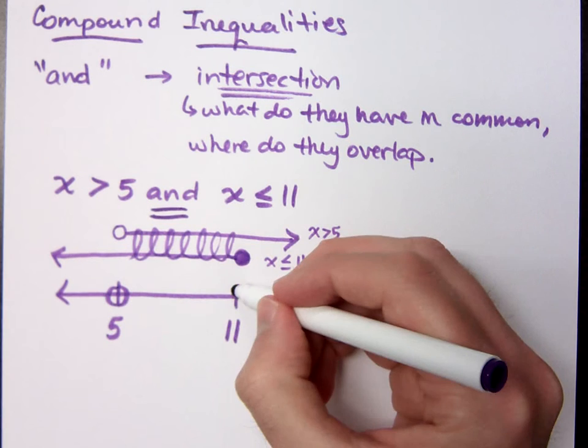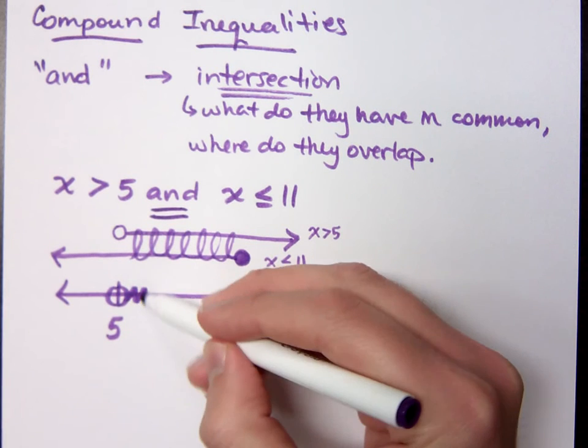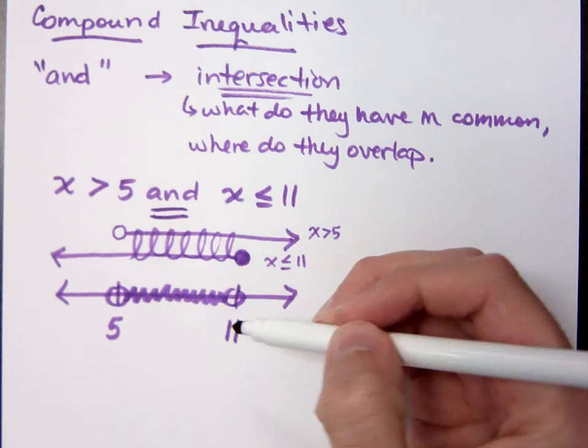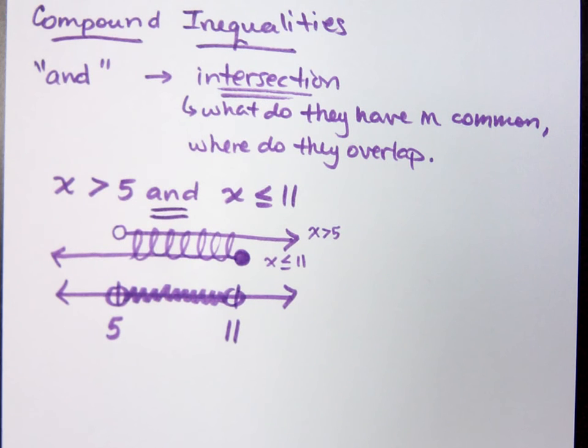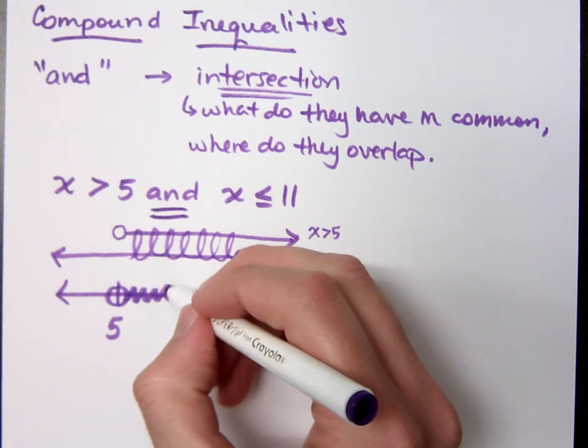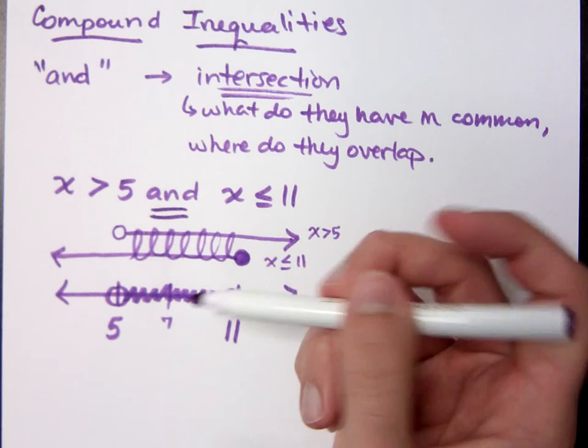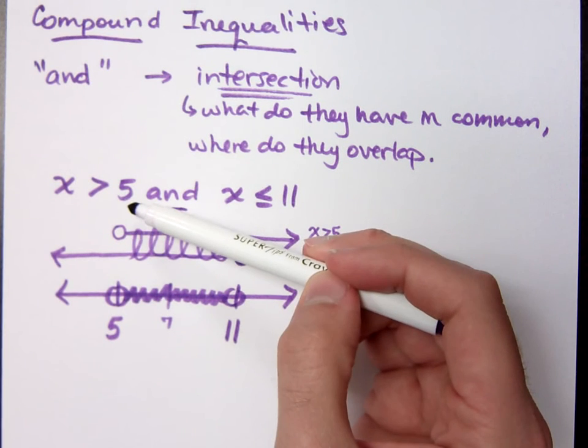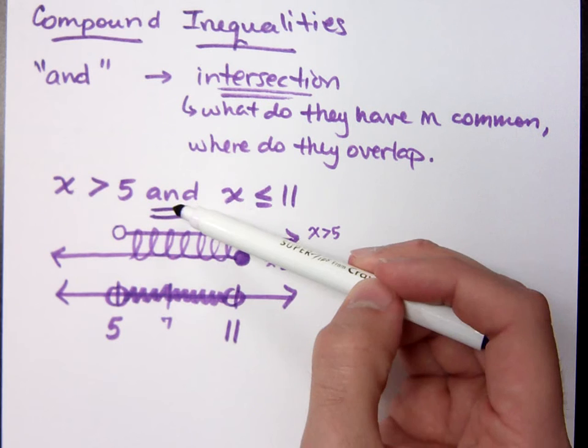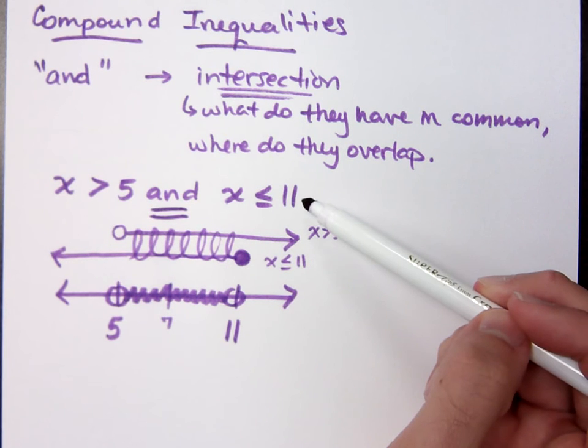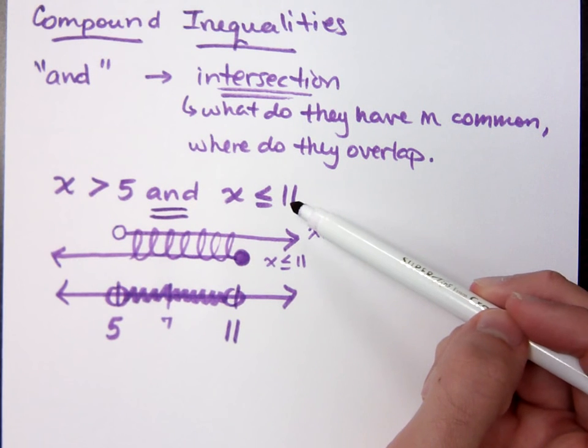In between 5 and 11, you have numbers that satisfy both of those inequalities. So it's not good enough to work for just one in this case, it has to work for both of them. So you pick a number between 5 and 11 like 7. Is 7 greater than 5? And is 7 also less than or equal to 11? So that works out.